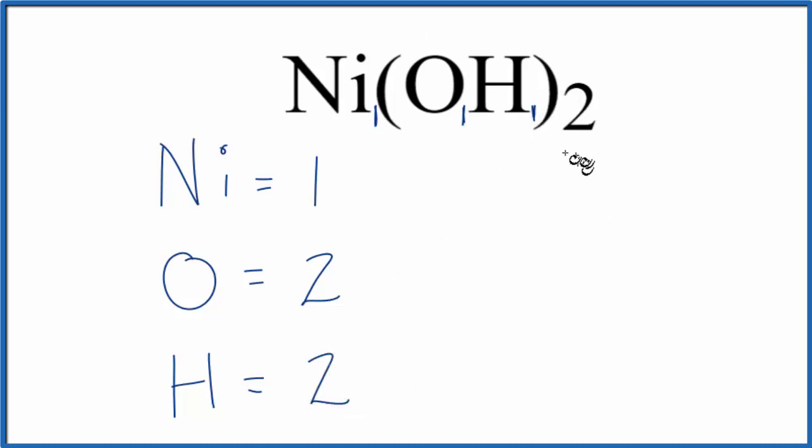If we wanted to know the total number of atoms in NiOH2, we just add these up. 2 plus 2 is 4, plus 1, 5 total atoms in nickel 2 hydroxide.